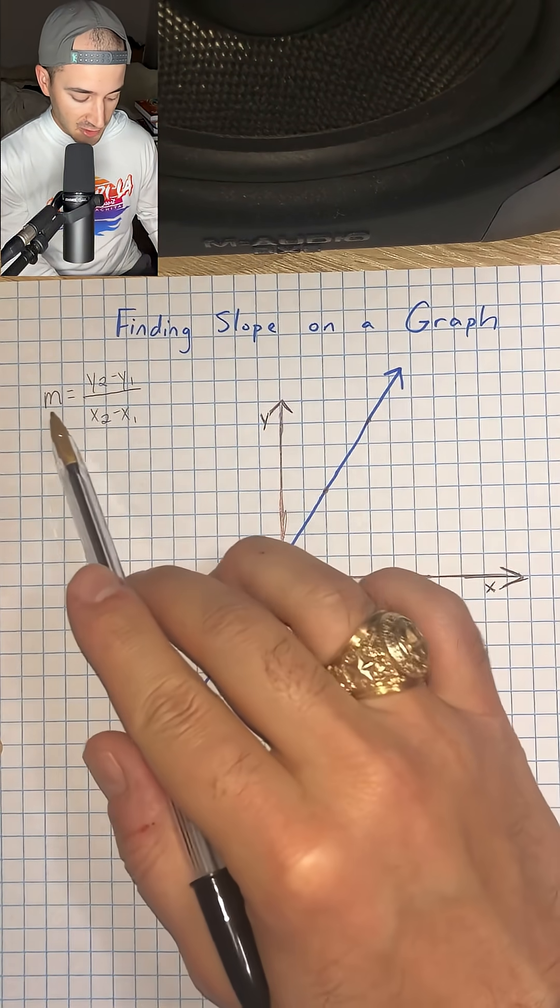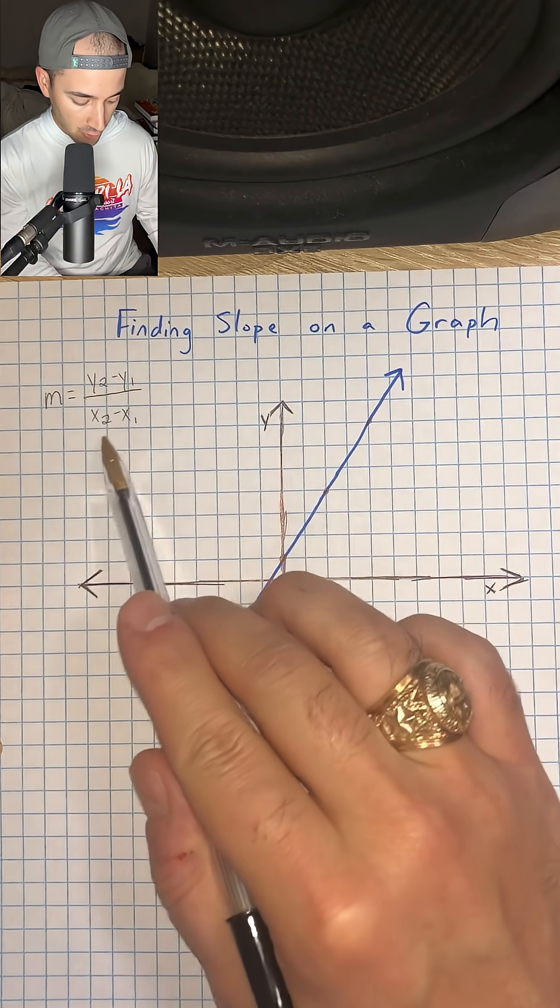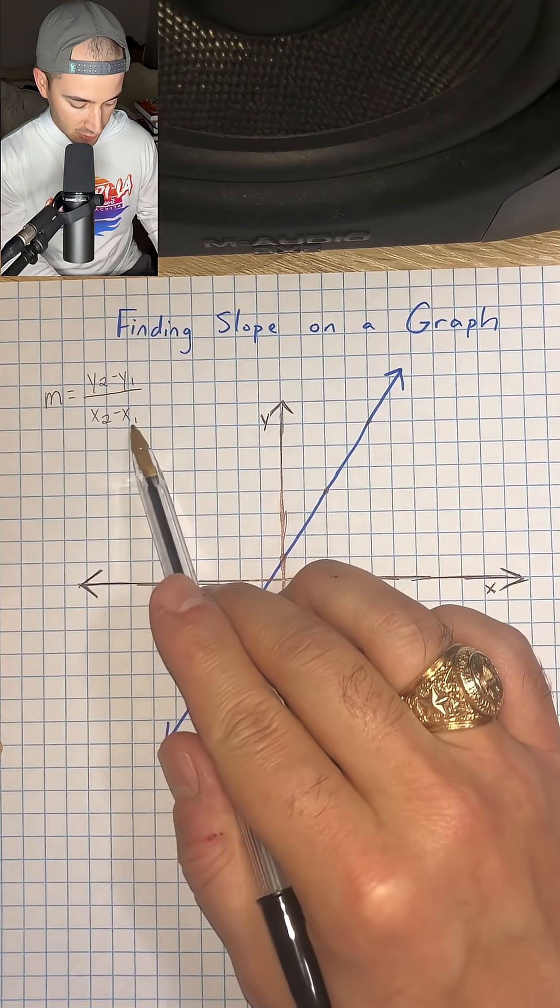So in the last video we talked about the slope formula, which is y2 minus y1 over x2 minus x1.